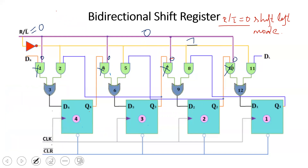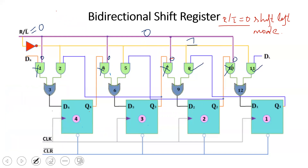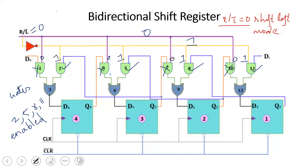In shift-left mode with yellow line = 1, gates 2, 5, 8, and 11 are enabled. The input is DL. The data input is 1, 1, 0, 1. Starting from LSB, input 1 is used first. All bits are transferred through the enabled gates.